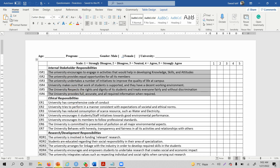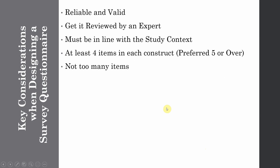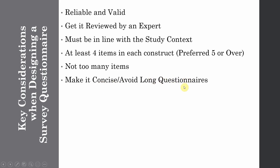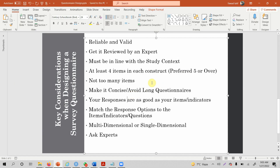Not too many items — make it concise and avoid long questionnaires. Avoid questionnaires that are four to five pages long. I normally prefer a two-page questionnaire for a study, although it depends on the number of constructs and items in a particular construct. Try to make it concise and avoid a long questionnaire.